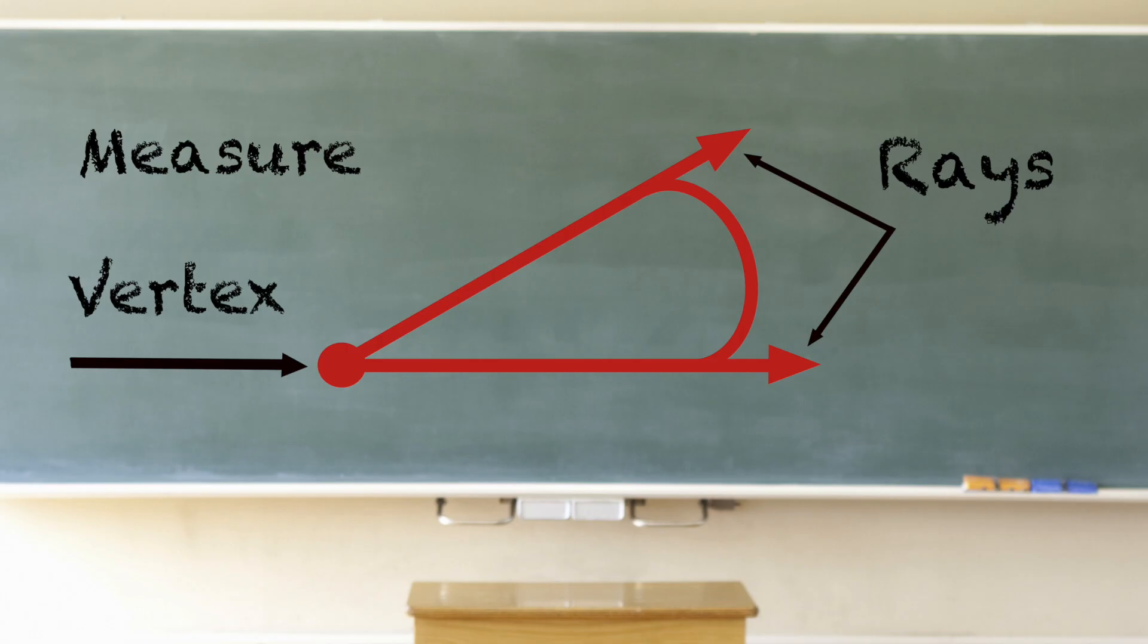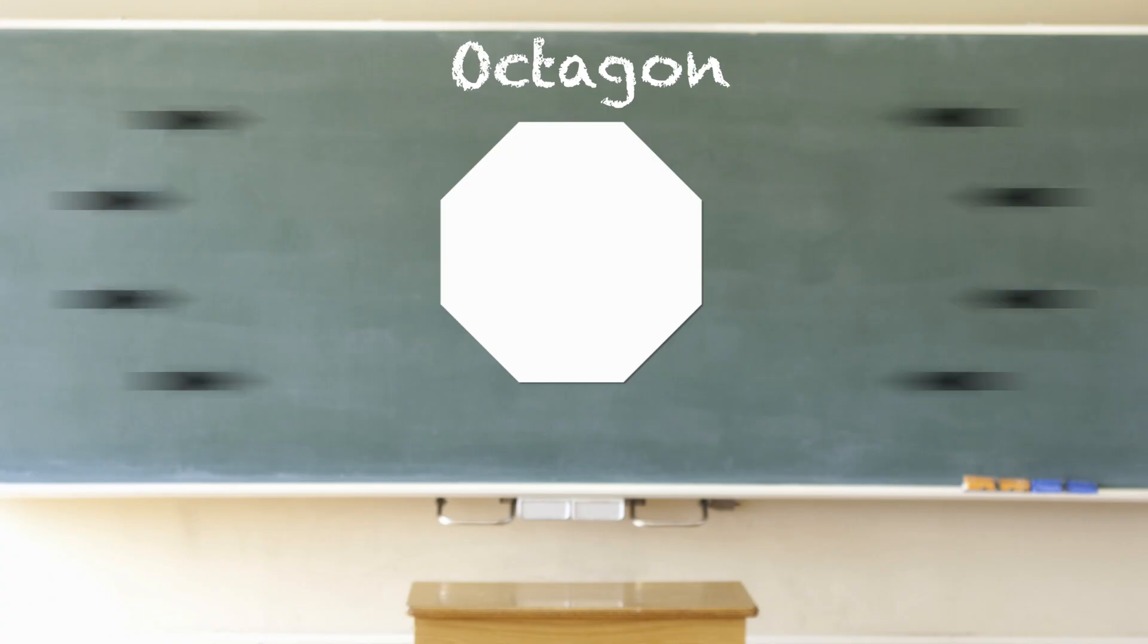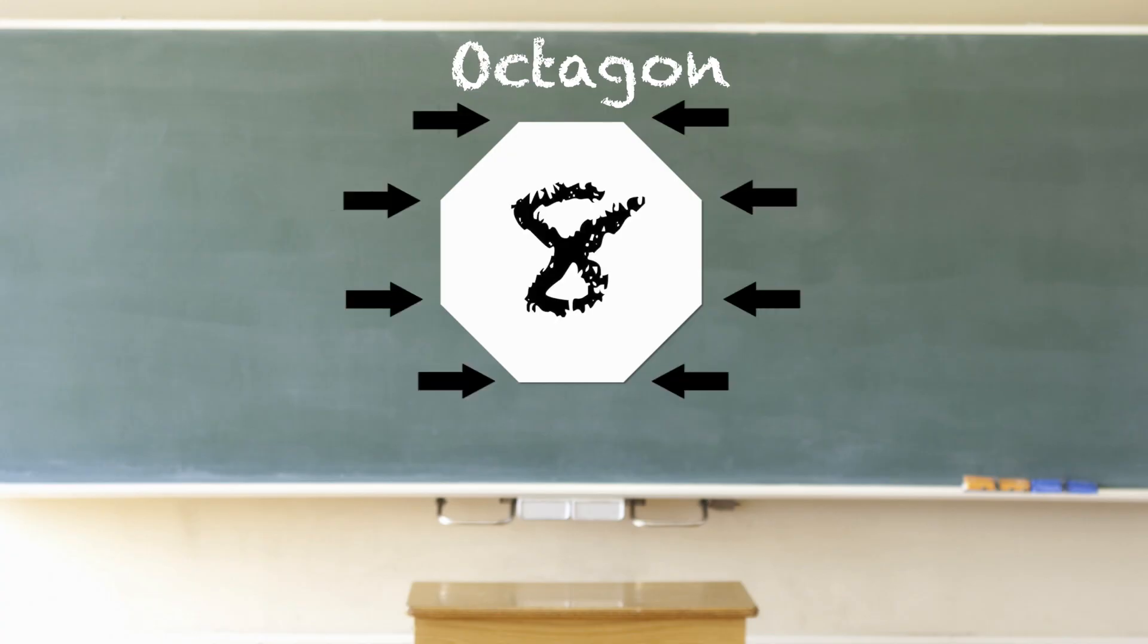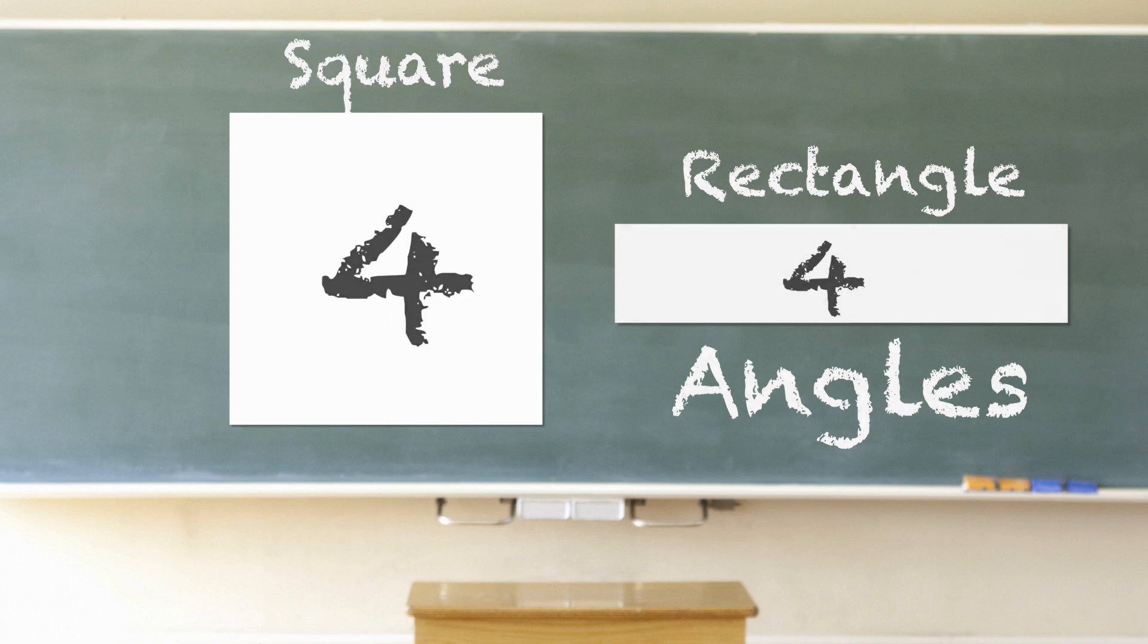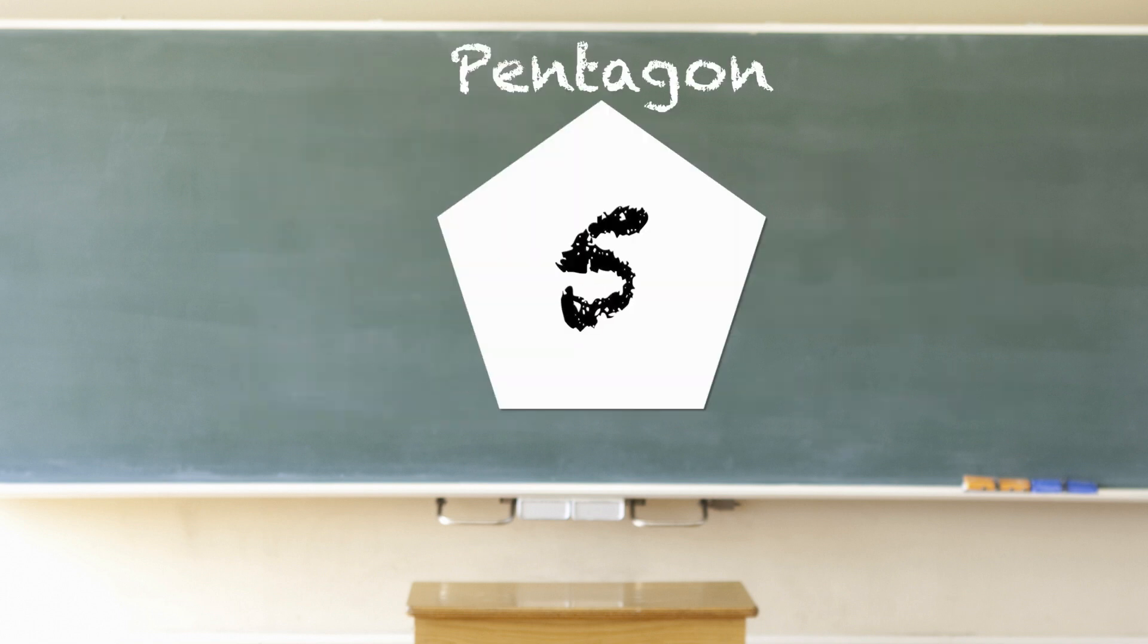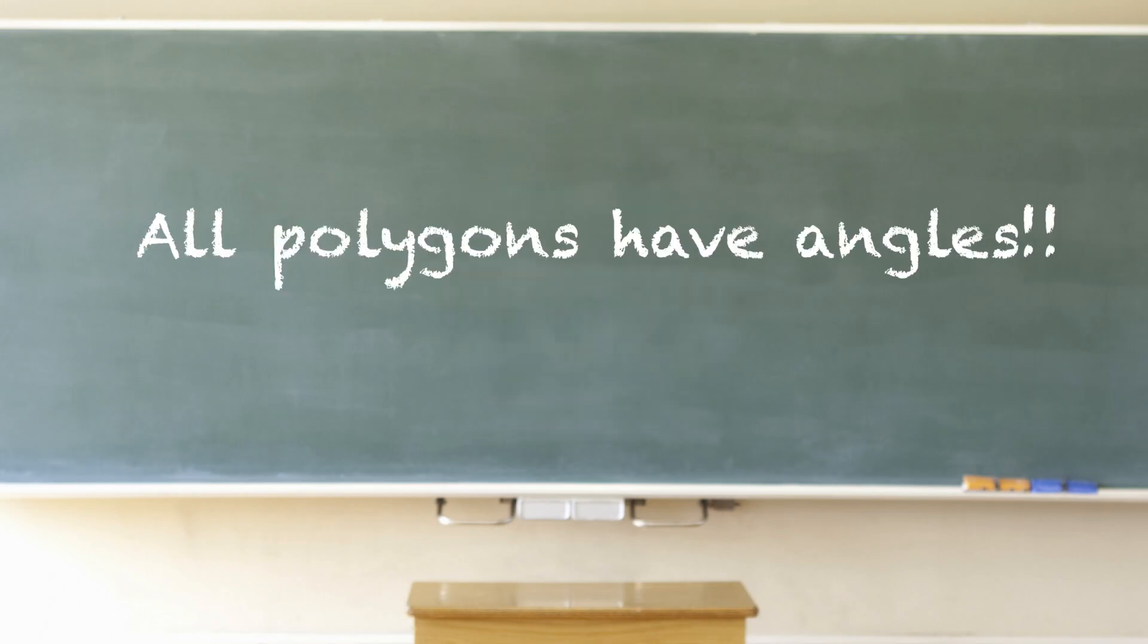Angles are also found in other geometric shapes. Some figures include three angles like the triangle, and some have many more like the octagon, which has a total of eight angles. A square and a rectangle each have four angles. A pentagon has five angles, and a hexagon has six angles. All polygons have angles.